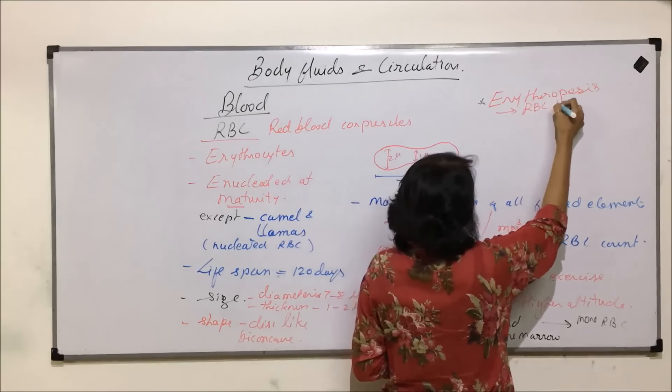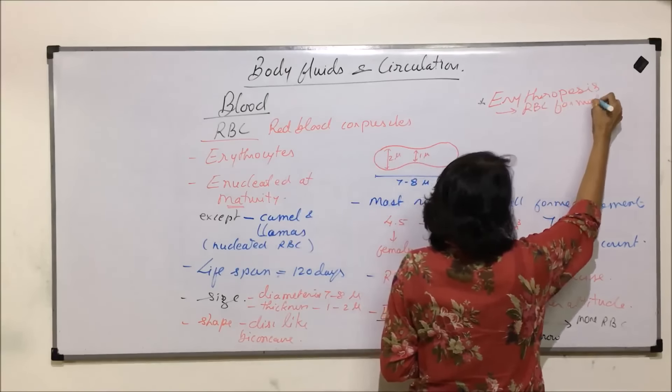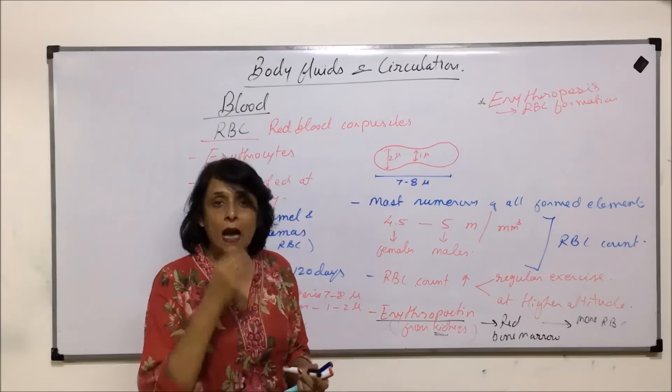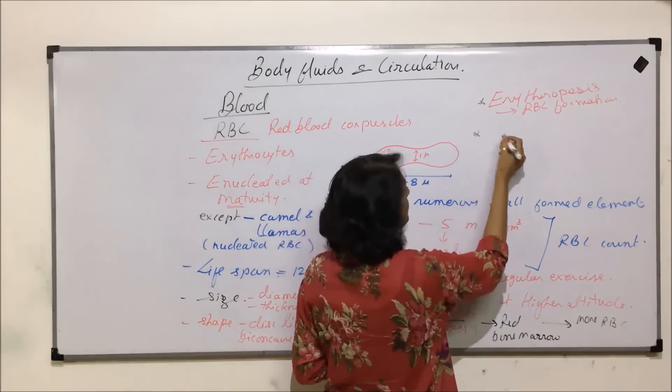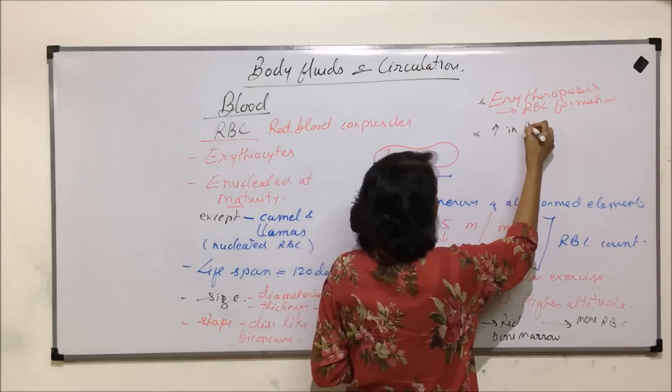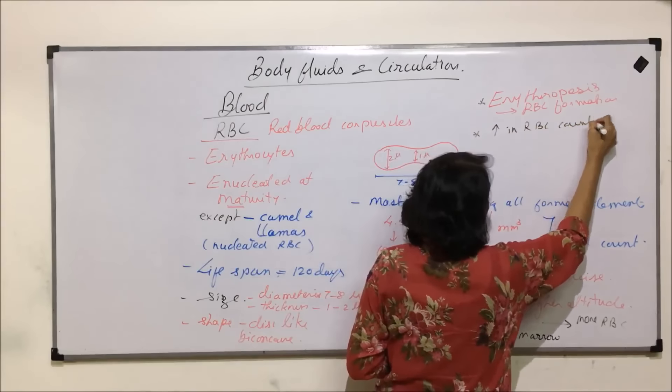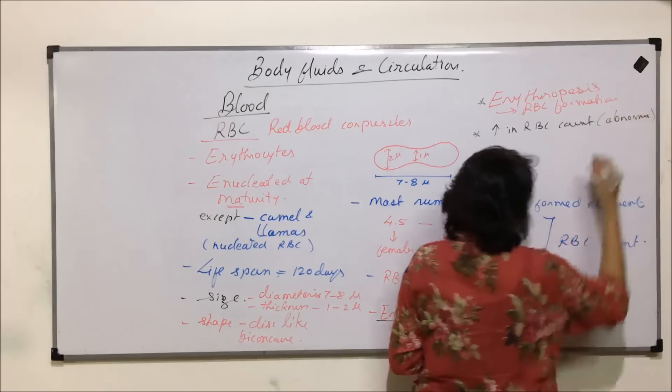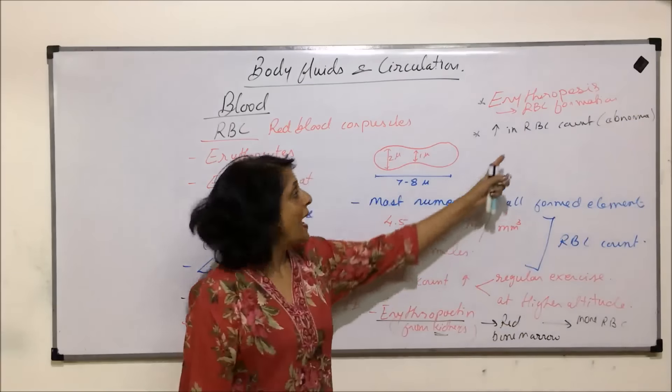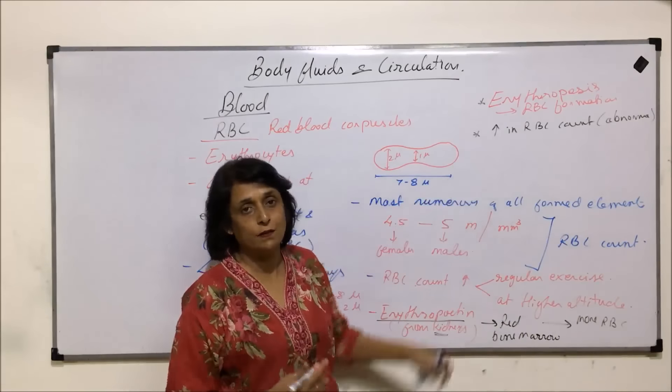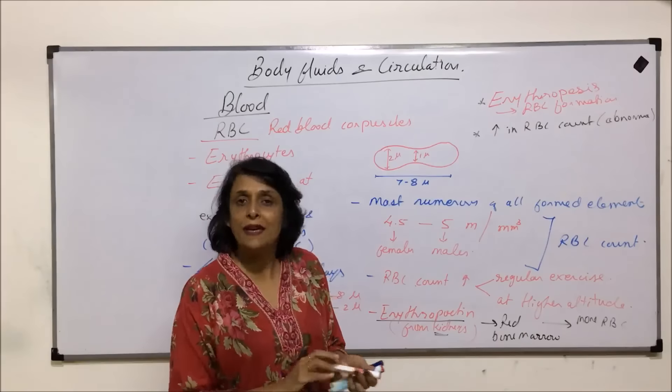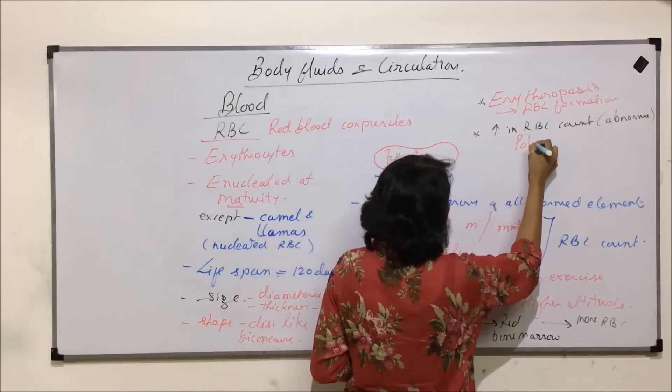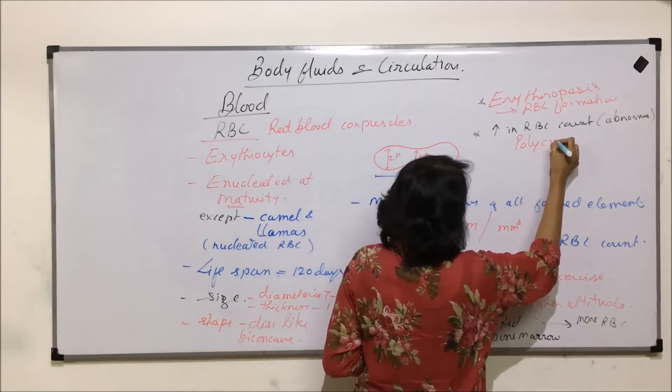If RBC count increases abnormally, increase in RBC count and this is abnormal, here it was requirement based and here it could be because of any kind of reason, chemicals or radiations. RBC count increases abnormally. Then the condition is known as polycythemia. Polycythemia is the condition when RBC count increases.